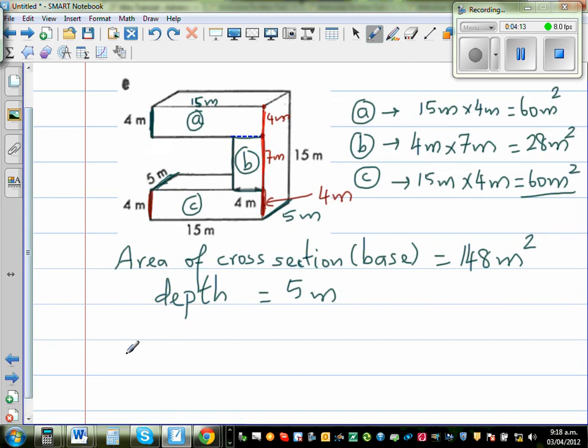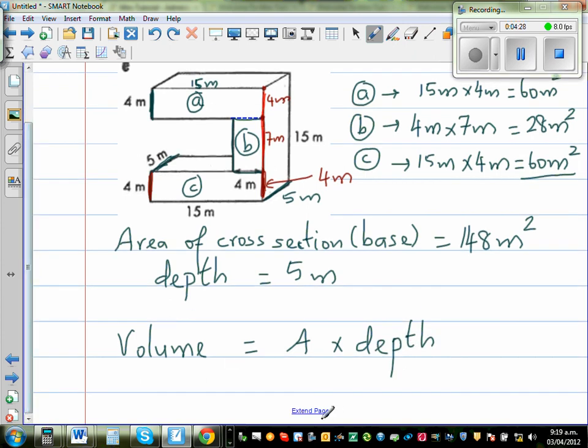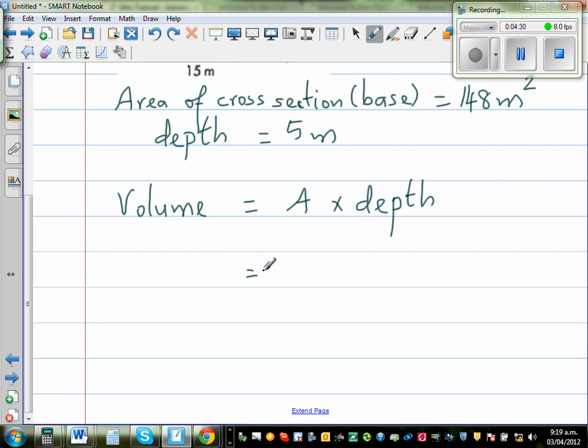So the volume of this prism is area, I'll write A for area times D or depth. Area times the depth. You can also say height. So which is 148 meters squared times 5 meters. So I'll first multiply the unit. Meter squared times meter is meter cubed.